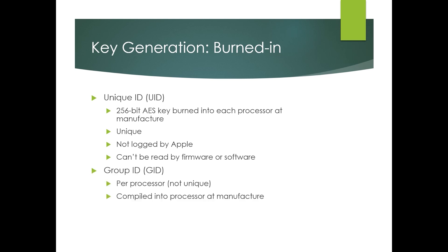There's also something called the GID, the Group ID. This is per processor — it's not unique. So if you and I have phones with the same processor, our GID is going to be the same. It's compiled into the processor at manufacture time. The iOS security guide doesn't really talk too much about how the GID is used, just that it is used. Both the UID and GID live in the Secure Enclave.